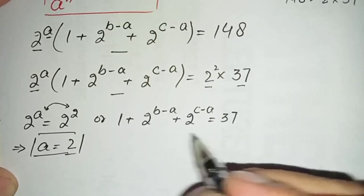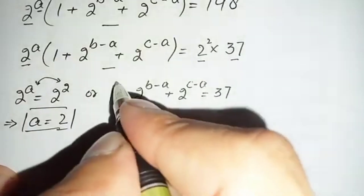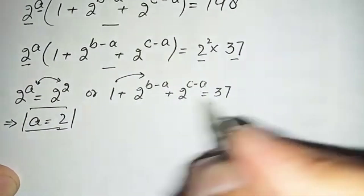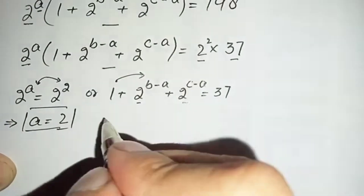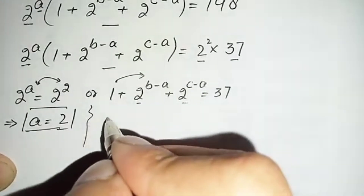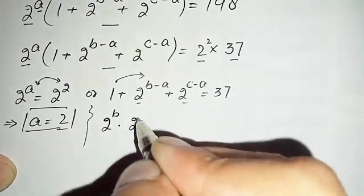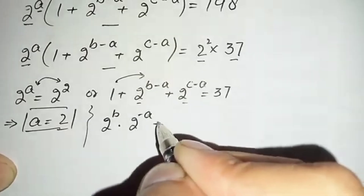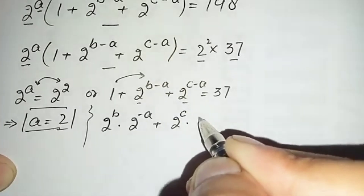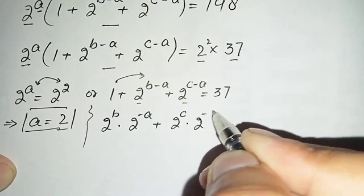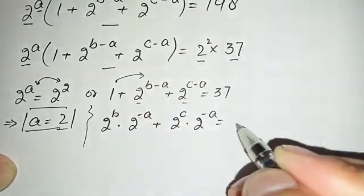Now we solve the second equation for b and c. The second equation is: 1 plus 2 raised to power (b minus a) plus 2 raised to power (c minus a) equals 37. Moving 1 to the right hand side gives 37 minus 1 equals 36. We rewrite the two terms as 2 raised to power b times 2 raised to power (minus a) plus 2 raised to power c times 2 raised to power (minus a) equals 36.